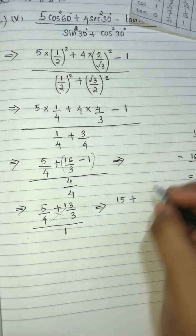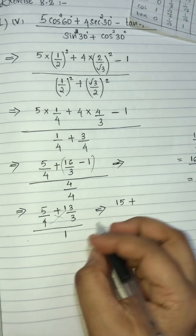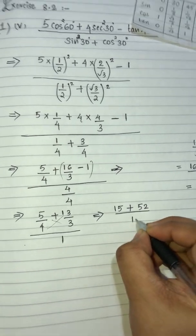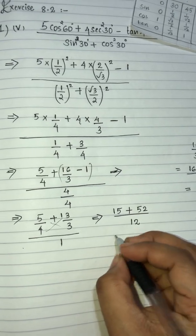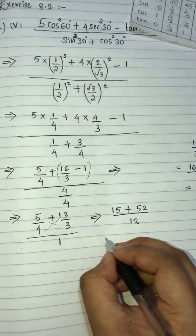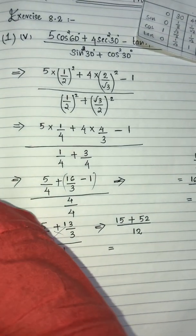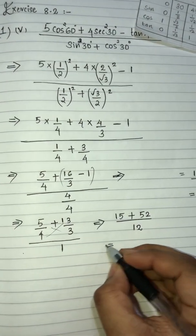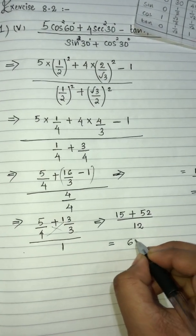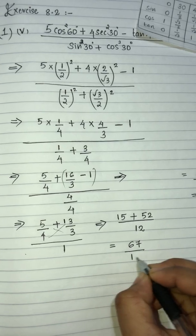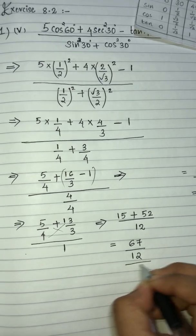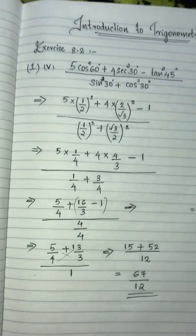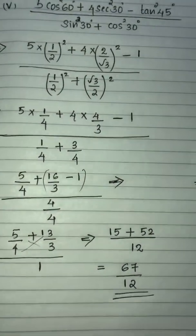52 divided by 4 × 3 = 12. Then 52 plus 15 = 67, divided by 12. So the answer is 67/12.